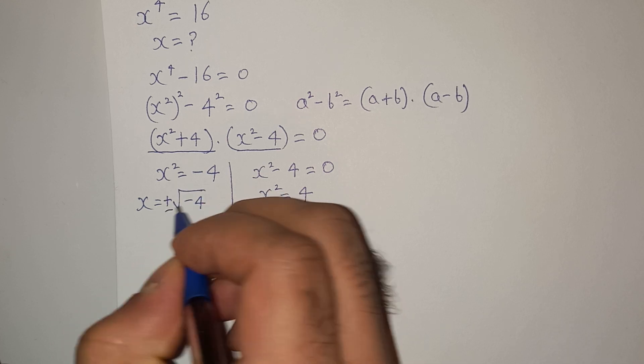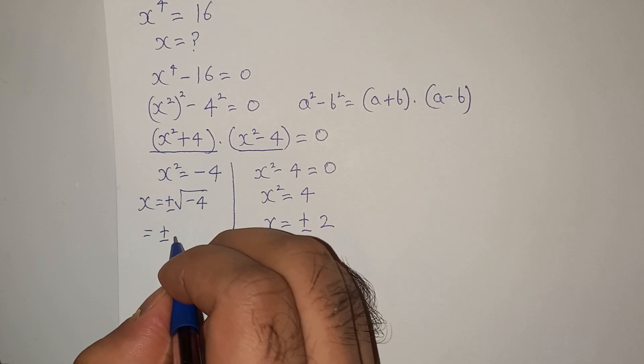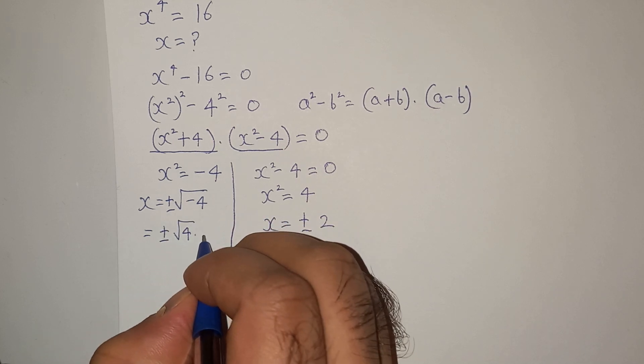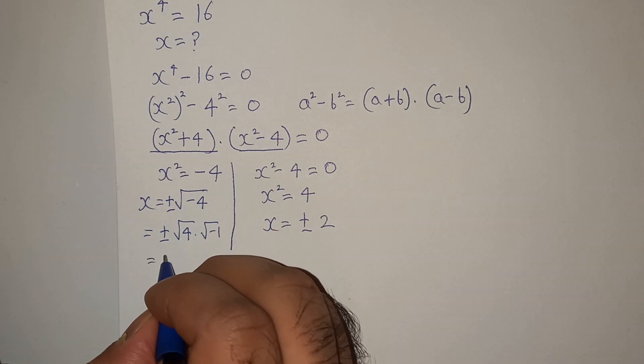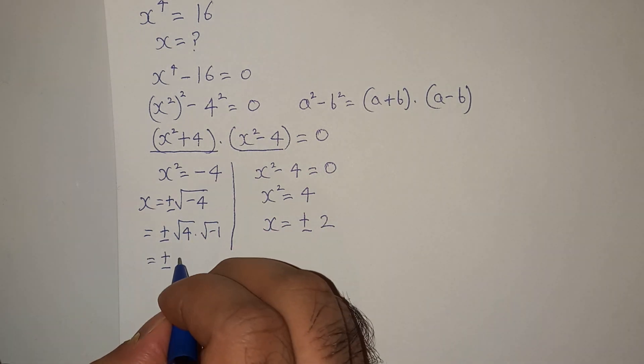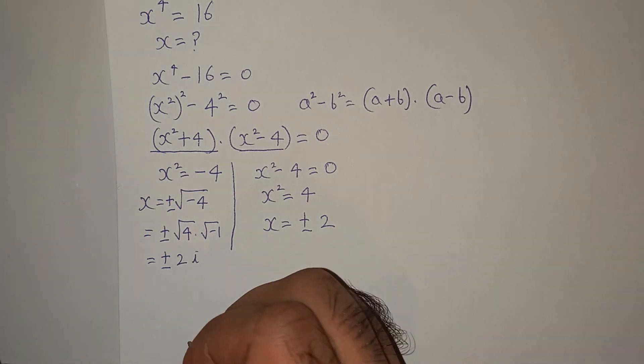So this will be plus minus, we can write this as root 4 multiplied by root minus 1. So this will be plus minus root 4 is 2, and root minus 1 is iota, which is a complex number.